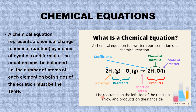Reactants are listed on the left side of the reaction arrow, and the products are on the right side of the reaction arrow. So this is how a chemical equation is made up.